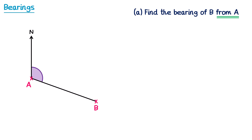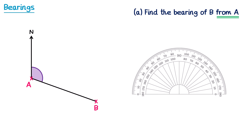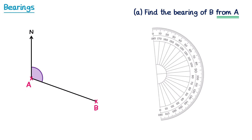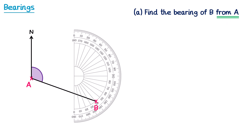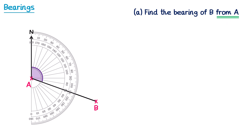To measure a bearing in an exam, you'll need to use a protractor. We're going to start by turning the protractor side on. The reason is we want the 0 to be at the top, since north has a bearing of 000. We then place the protractor so that the cross is on the angle. We can then use the outside scale to read off the angle — starting at the 0 at the top and reading around — we can see that the angle is 110 degrees. So the bearing would be 110 degrees.